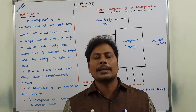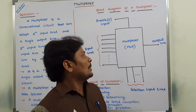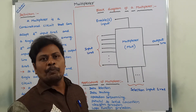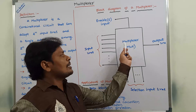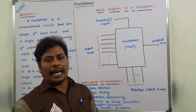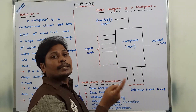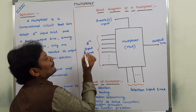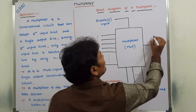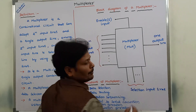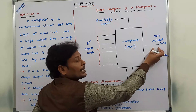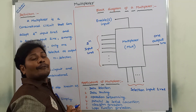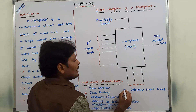This is the functional block diagram of a multiplexer. A multiplexer can also be denoted as MUX. A multiplexer is a combinational circuit that can take 2^n number of input lines and it produces only one output line. This output line can be selected among the 2^n number of input lines by using n number of selection input lines.